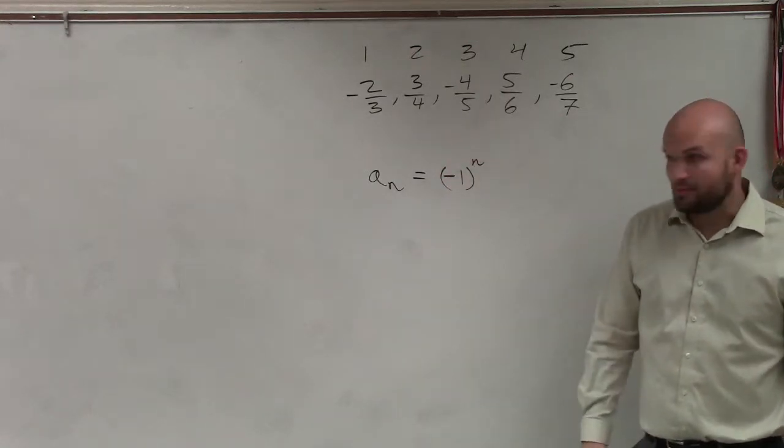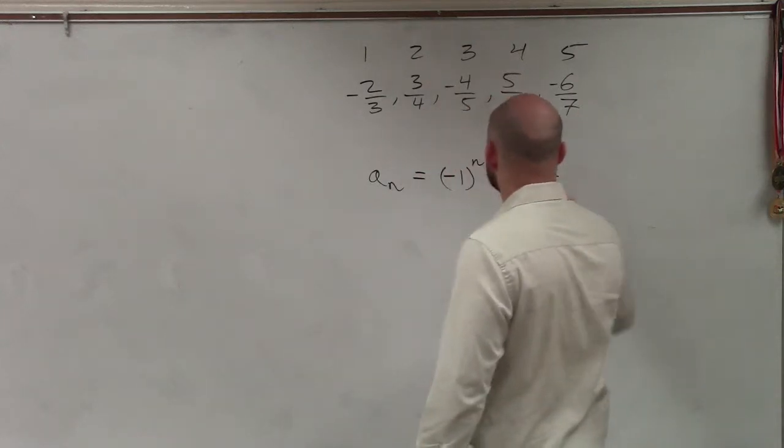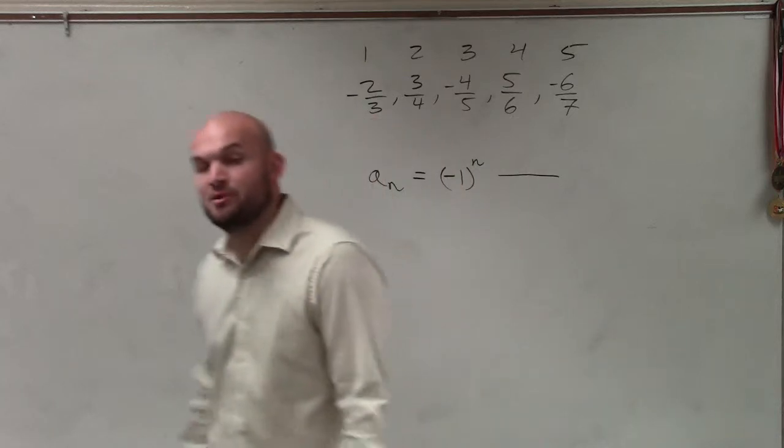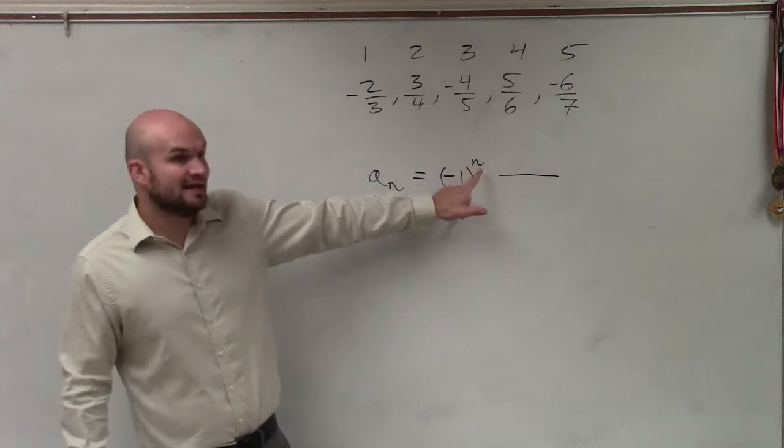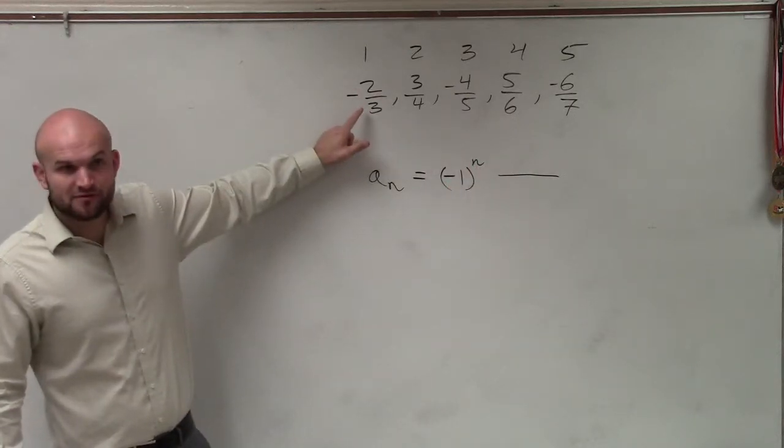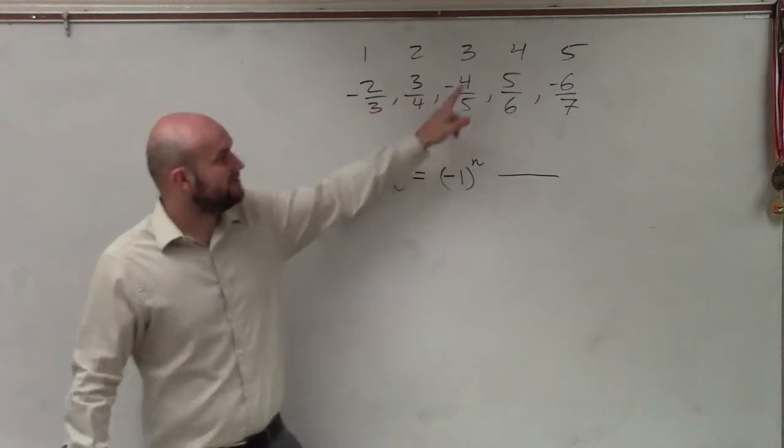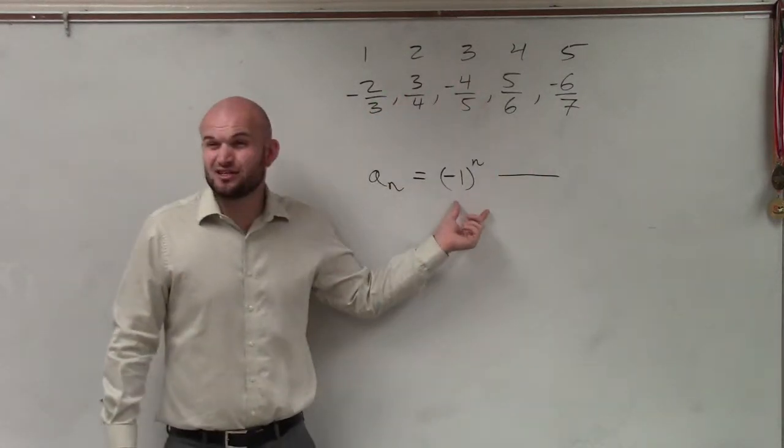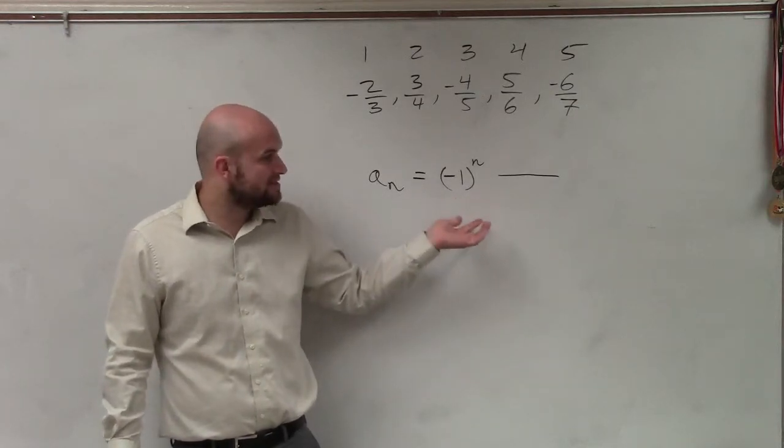Then we see we have a numerator and a denominator. When I see that, I like to separate them. I'll put a fraction bar and find the rule for the top and the bottom. Now, if N equals one, that's going to be negative. Does this make my first term negative? Yes. And then if that's two, that would be positive, then negative, positive, then negative. So it doesn't look like I need to change anything here. Let's investigate and find the rule.